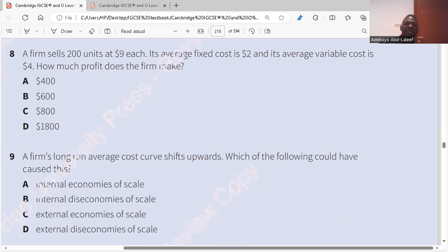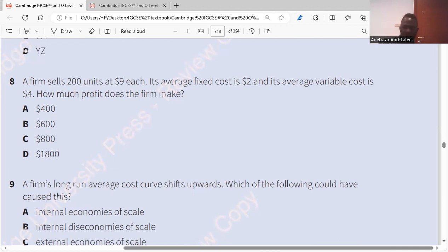Question eight. A firm sells 200 units at $9 each. The average fixed cost is $2. Its average variable cost is $4. How much profit does the firm make? So it sells 200 units. Hold on. That's $1,800. So $1,800 is the total revenue. TR is $1,800. Please write that. Yes, $1,800 for total revenue. And they said the average fixed cost is $2. The average variable cost is $4. Average fixed cost and average variable cost becomes total cost. No, listen. Listen now, please.